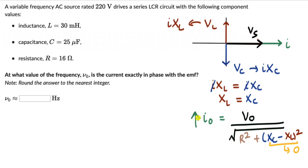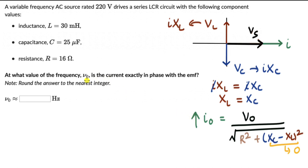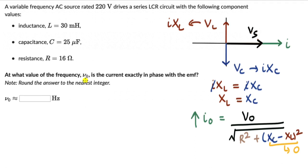This maximum current amplitude connects to what we learned in simple harmonic motion. There was one frequency at which we got maximum amplitude, and here at this frequency we are getting the maximum amplitude of the current — the maximum peak value. So this frequency V₀ must be the resonance frequency, and our job is to find it.